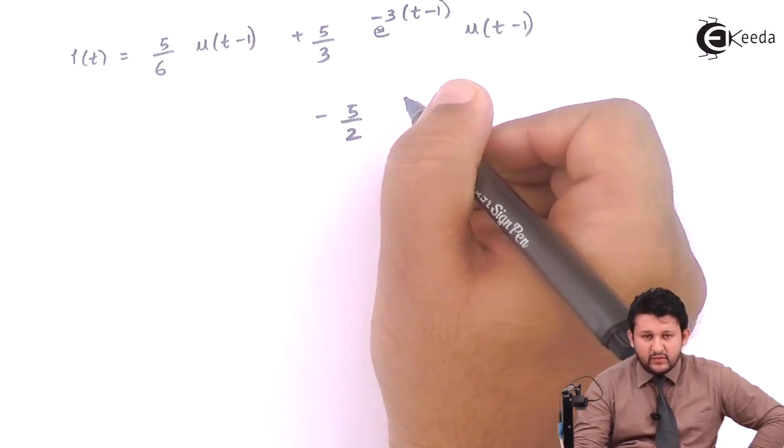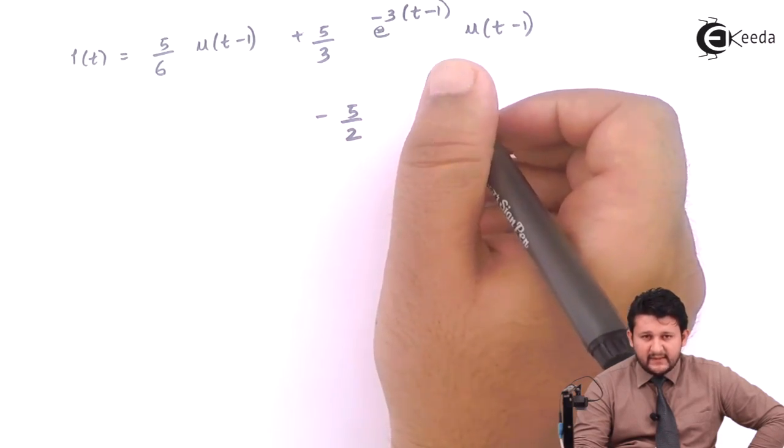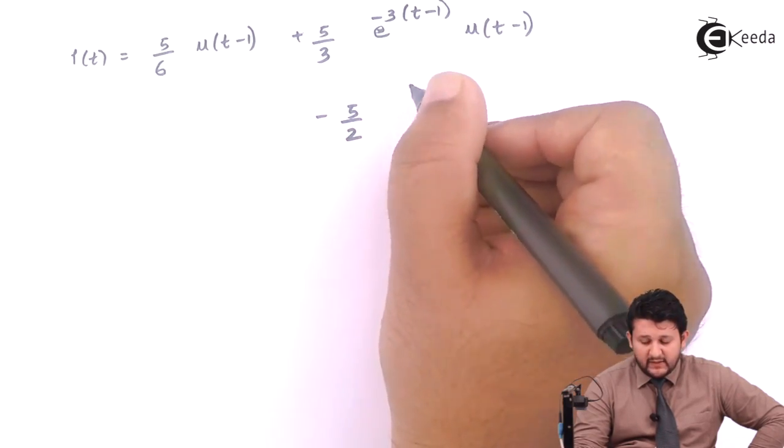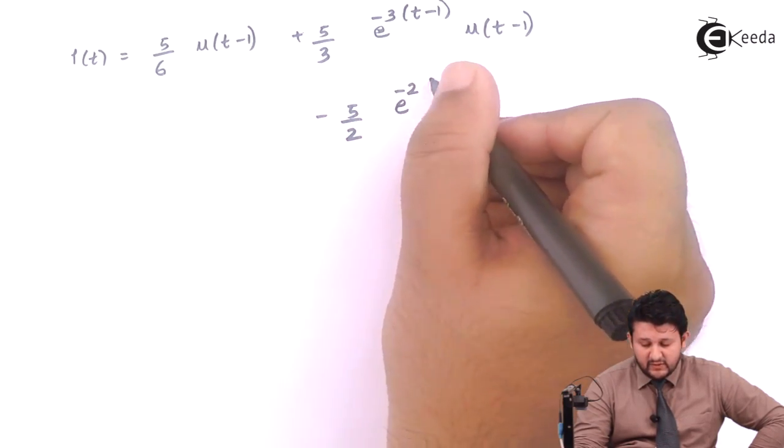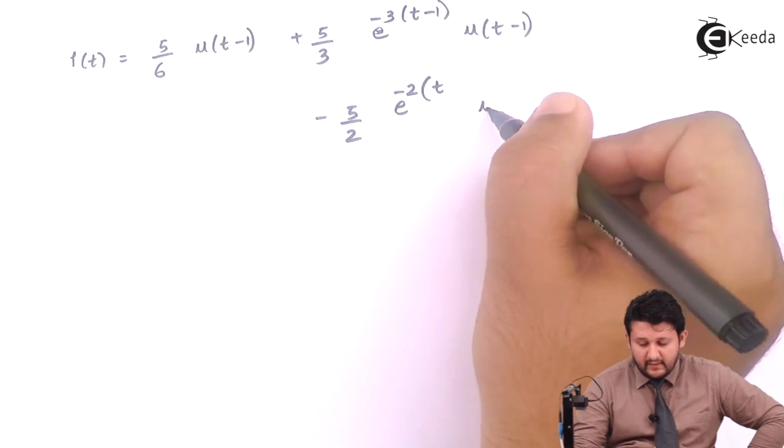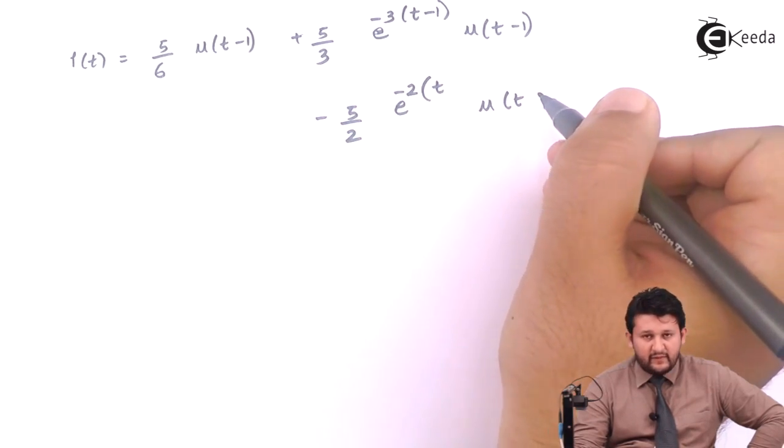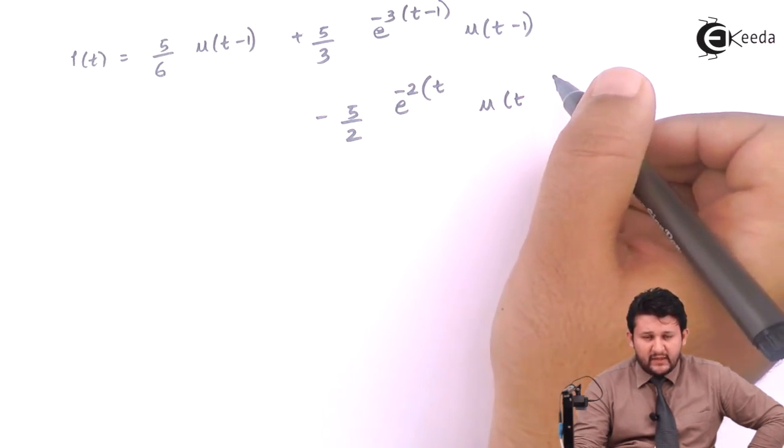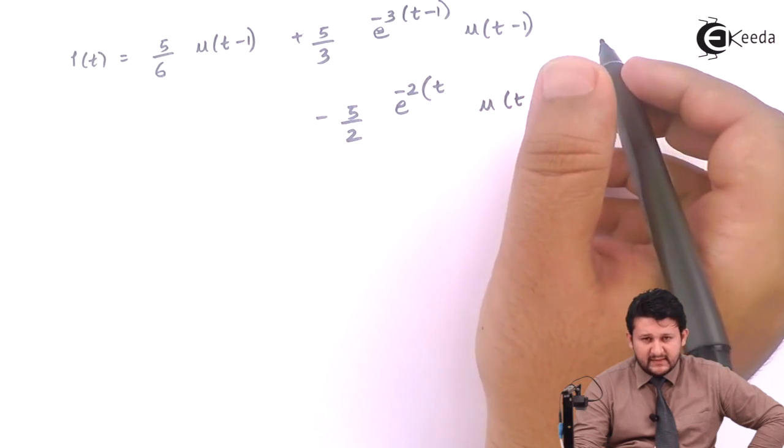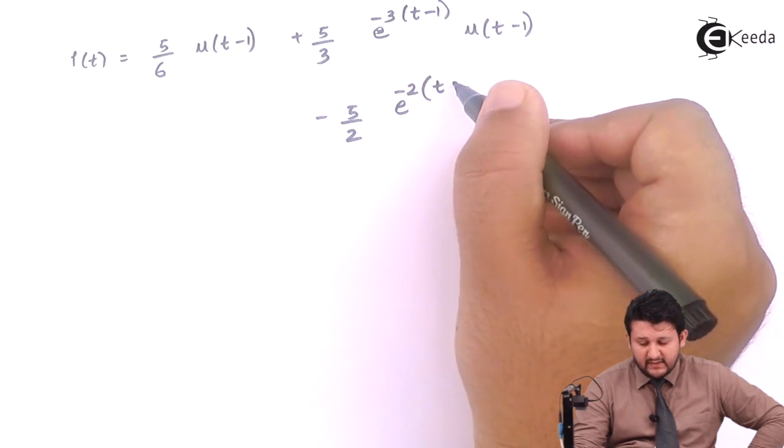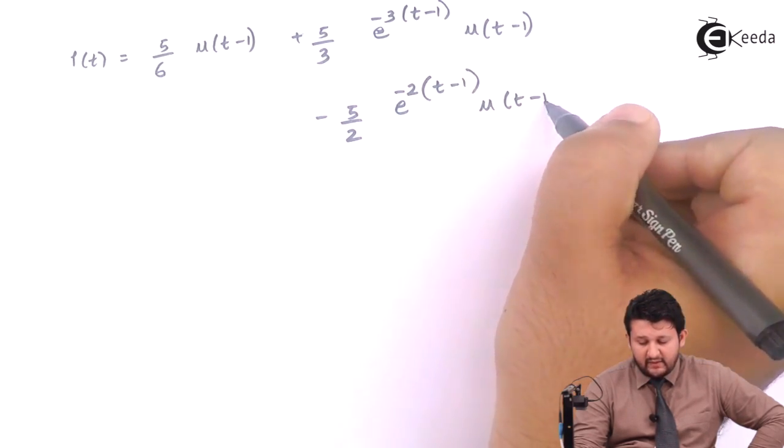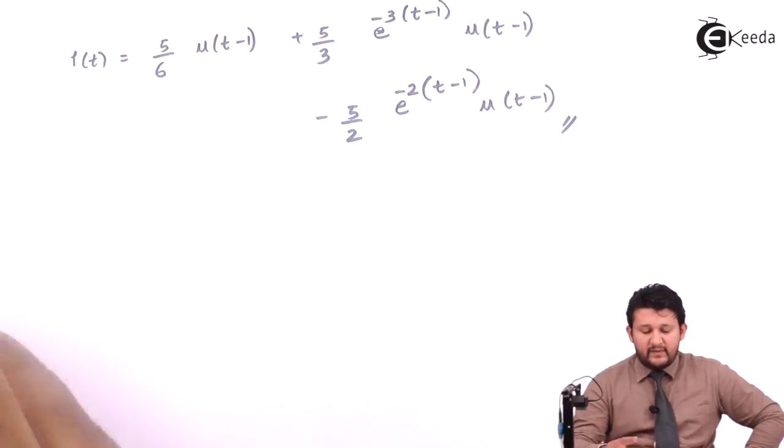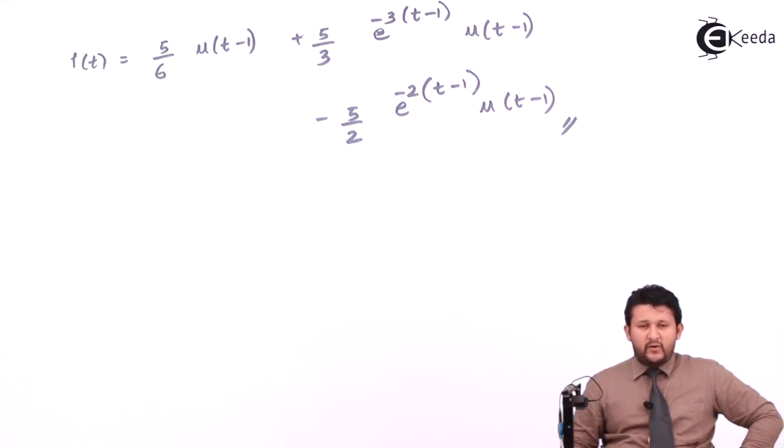Minus 5 upon 2, you have in denominator 1 upon S plus 2, so for plus 2, it will be e raise to minus 2t, exactly opposite. And for 1 upon S, it will be U of t, and in numerator you have exponential e raise to minus S, so it will be minus 1, so wherever you have t, it will be t minus 1. That will be the equation for I of t. I hope you got this summed up.